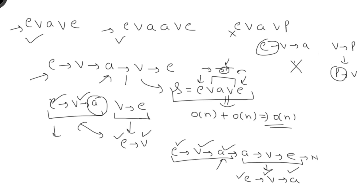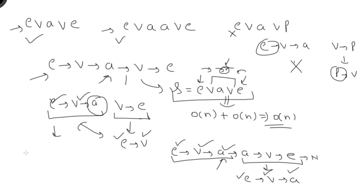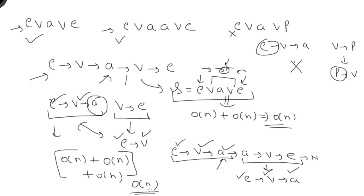For the time complexity of this approach: finding the middle element is O(n), reversing the second list is O(n), and comparing characters is O(n), so overall time complexity is O(n). For space complexity, I'm not using any extra array or data structure — I'm only working within the list itself — so space complexity is O(1), constant space.